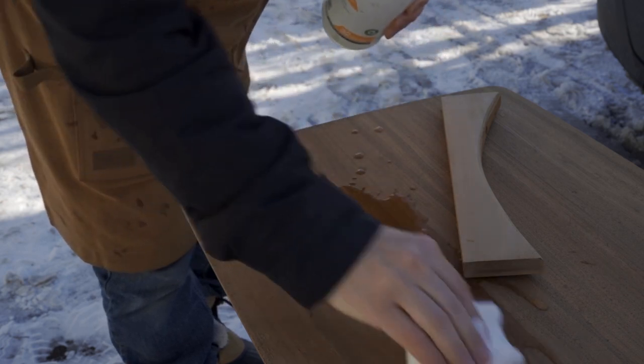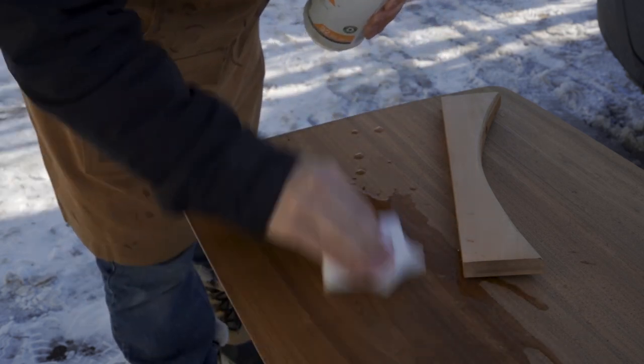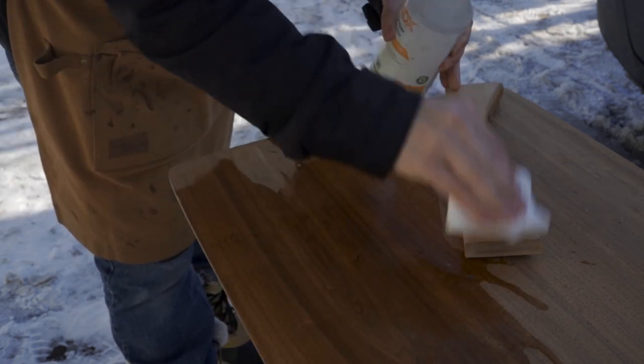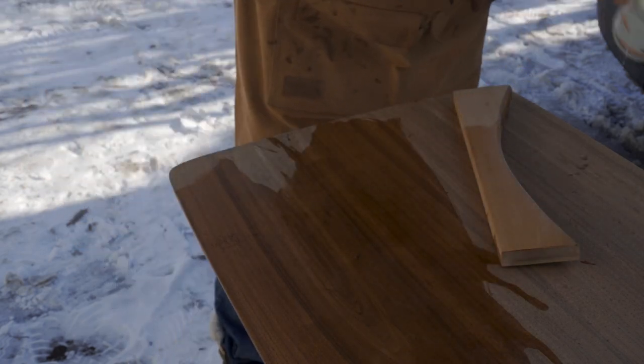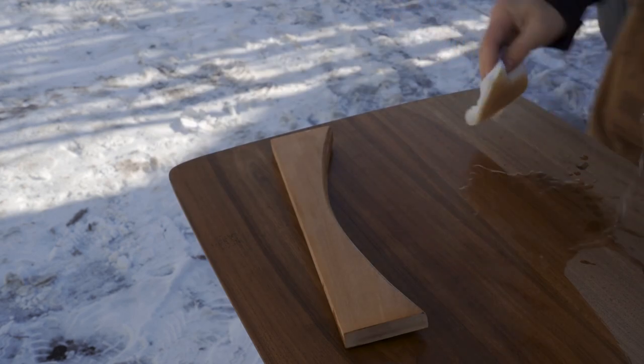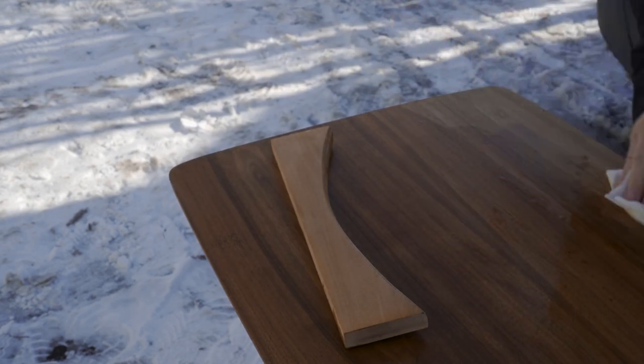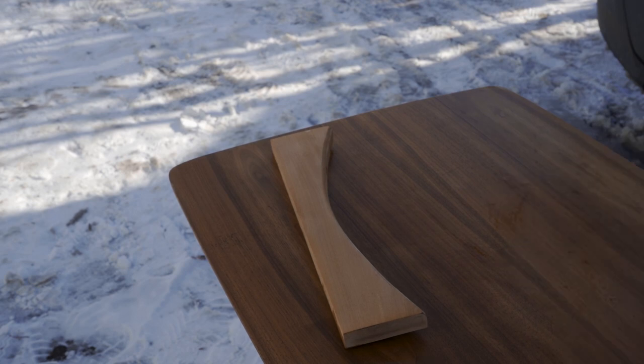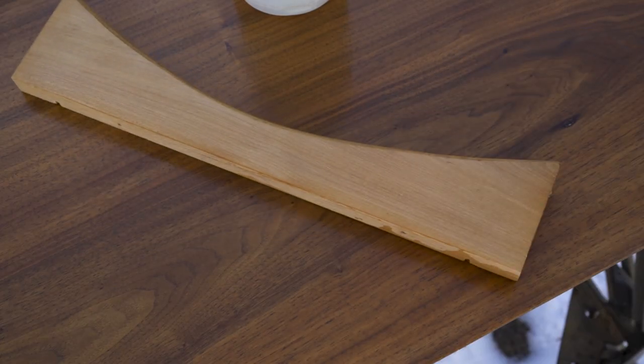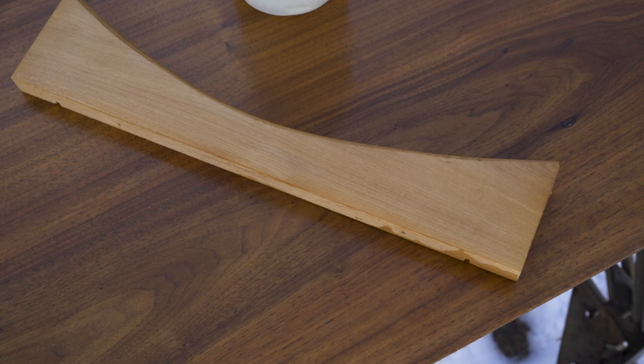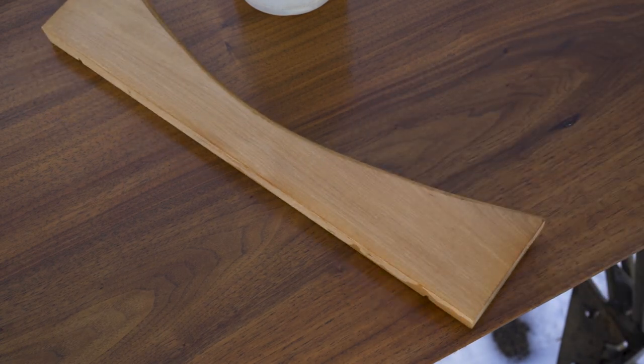Once all of the finish had been removed, I wet down the top and a piece of the apron. And this basically shows me what it would look like if I put a clear finish on it. As you can see, the top is a lot darker than the apron. The top is a walnut veneer.